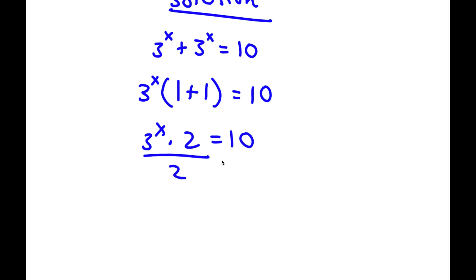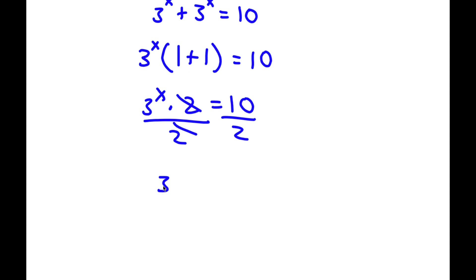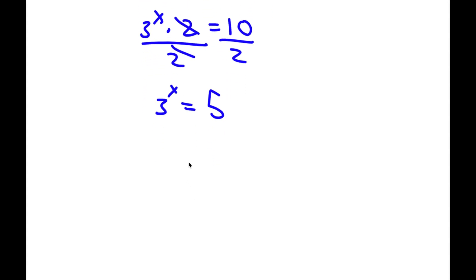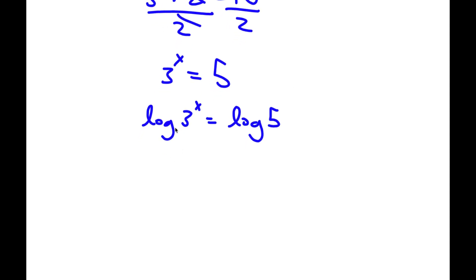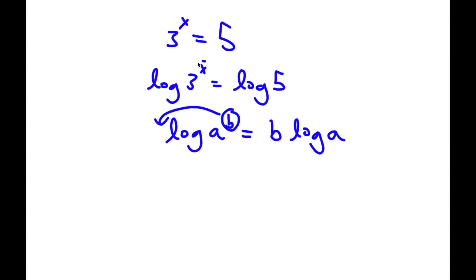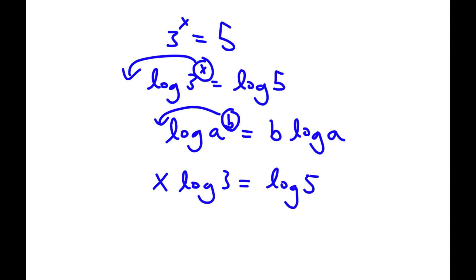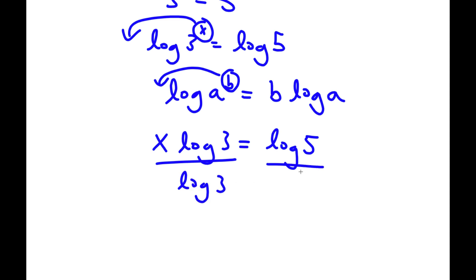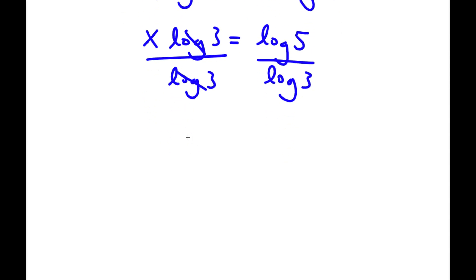Now I'm going to divide by 2 on both sides, so these two cancel out, and I'll be left with 3 to the power of x is equal to 5. Now to solve this, I'm going to take the log on both sides: log of 3 to the power of x equals log 5. An important property of logarithms is that log of a to the power of b equals b times log a. So I can move x to the front: x times log 3 equals log 5. Then I divide both sides by log 3, and x equals log 5 over log 3.